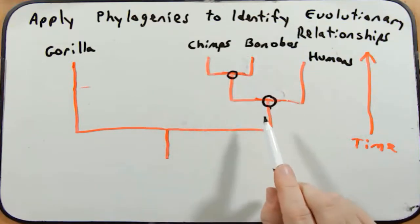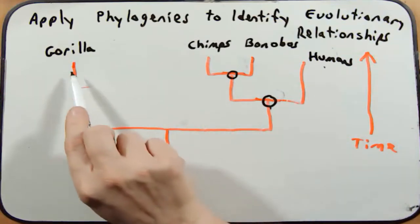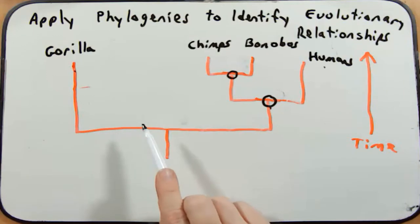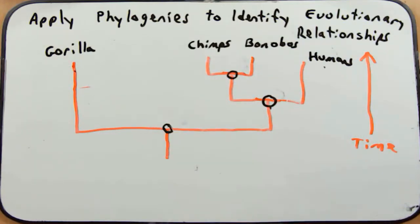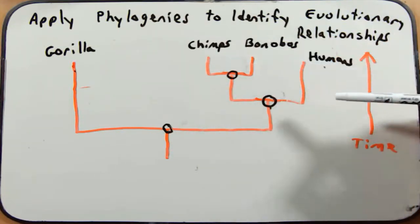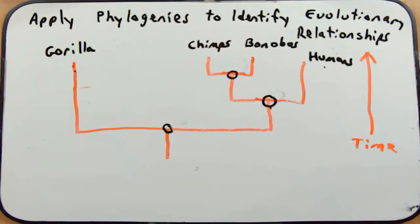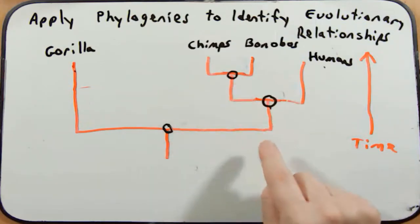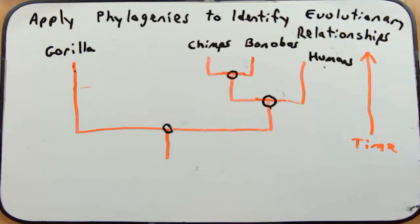Chimps and bonobos are more closely related to humans than they are to gorillas, because gorillas share a common ancestor with all three of them at a more distant node. Finally, it would be incorrect to say that humans are more evolved than chimps, bonobos, or gorillas — they are just differently evolved, shaped by different evolutionary pressures. So next time someone says humans evolved from chimpanzees, politely correct them: chimpanzees and humans shared a common ancestor and evolved differently.